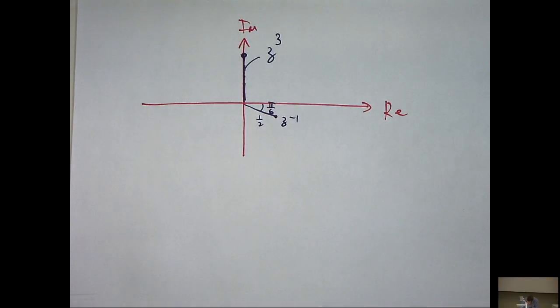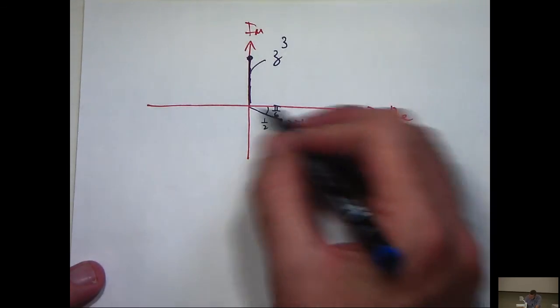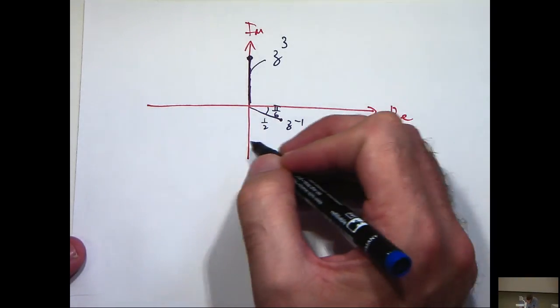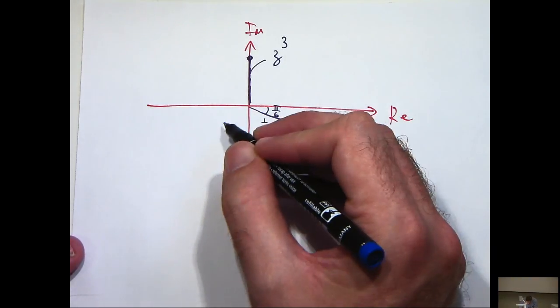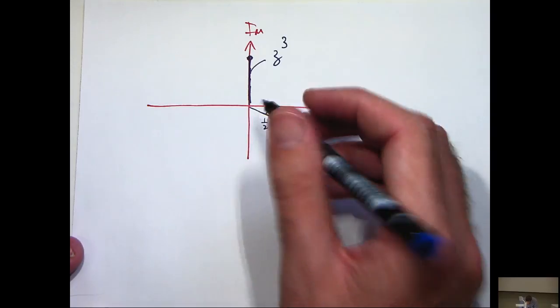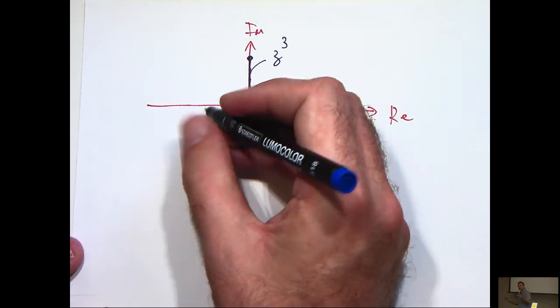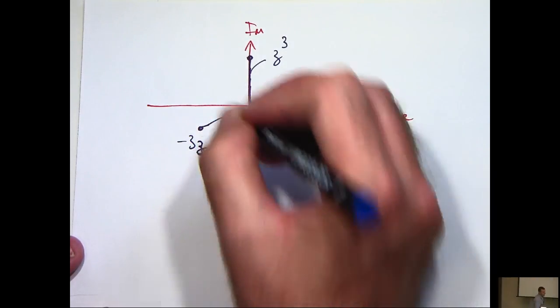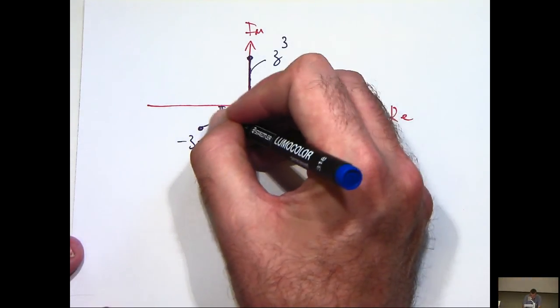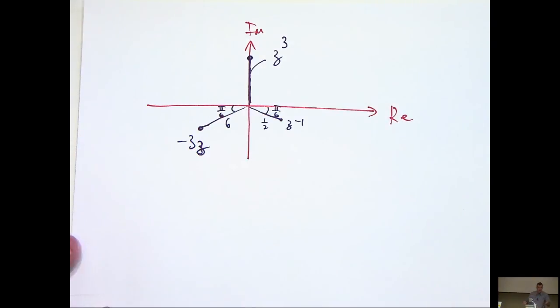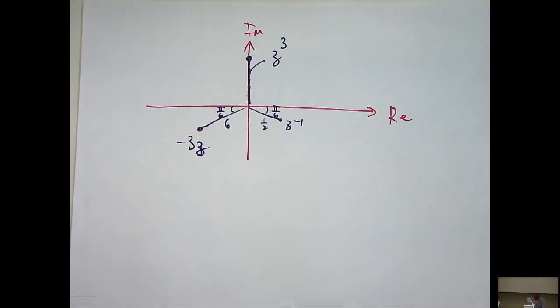And lastly, -3z was 6e^(-i5π/6), so we go out six units, and then around in a clockwise direction, 5π/6. Okay, so that's the end of our question.